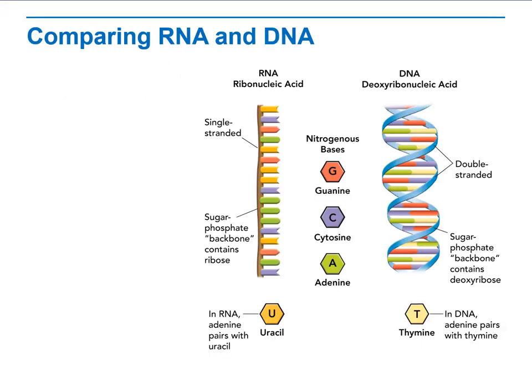Comparing DNA to RNA: DNA has double strands or double helix strands, while RNA is only a single linear strand. Also, the nucleic acids — the nitrogen bases inside them — contain guanine, cytosine, and adenine in both. However, thymine is found only in DNA, and uracil is found only in RNA. So within RNA, thymine is replaced by uracil.